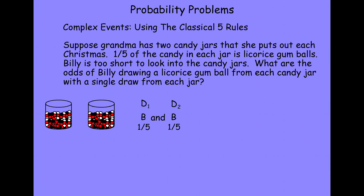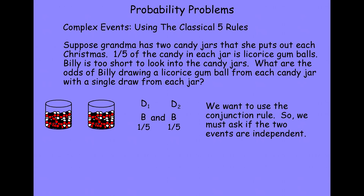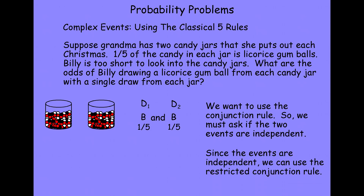Now we have to ask ourselves, if we're going to use the conjunction rule, are these two events independent of each other? That is, does what Billy gets when he draws from the first jar affect the likelihood of what he'll get from the second jar? Since these are two independent jars, they are completely separate, and so the principle of independence holds. We can use the restricted conjunction rule. The probability of drawing a licorice gumball from the first and a licorice gumball from the second equals one-fifth times one-fifth, or one over twenty-five.